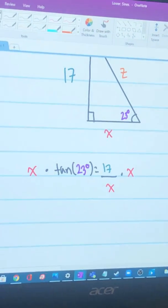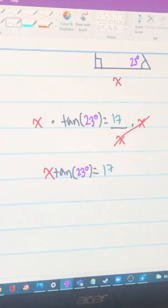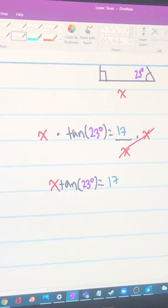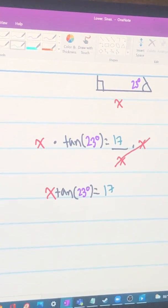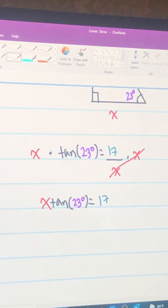So on the right side, X cancels out and we have X times tan of 23 degrees equals 17. Now you divide both sides by tan of 23 degrees and put it in your calculator, but make sure it is in degree mode.